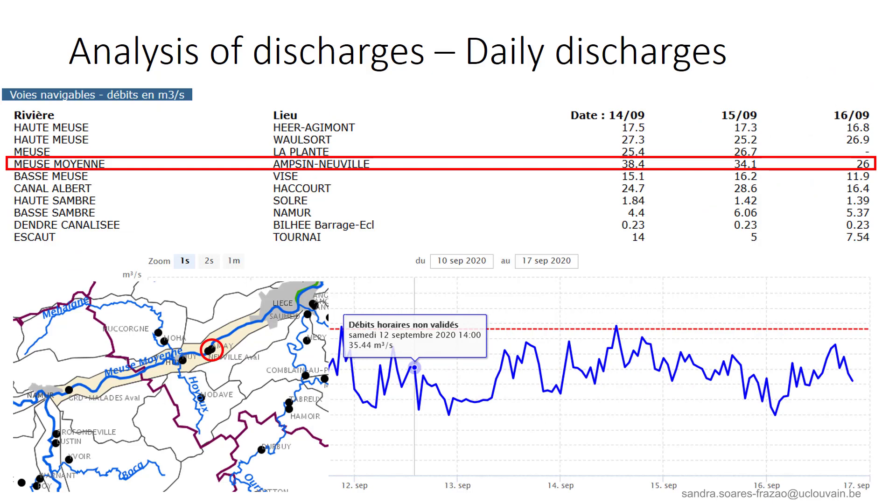This data can be averaged over one day to obtain the daily discharges that are for example summarized in this table for different stations along Belgian rivers. We can see an example of three daily values for the station of Hamais that is here identified as Saint-Neuville. The decrease in trend that we can see here can also be seen here in the three daily discharges.